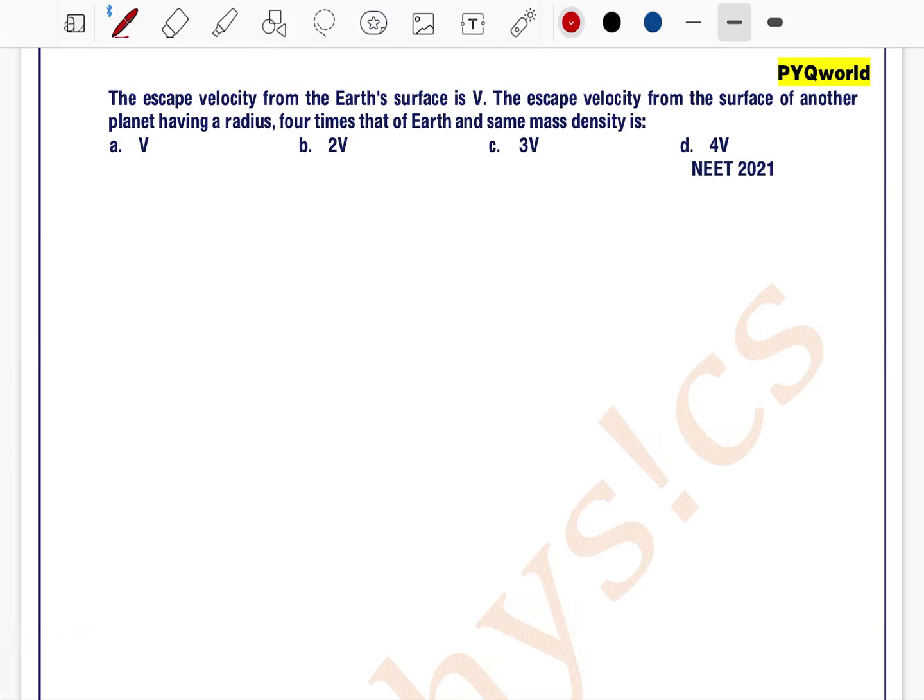The escape velocity from the earth's surface is v. The escape velocity from the surface of another planet having a radius 4 times that of earth and same density is.